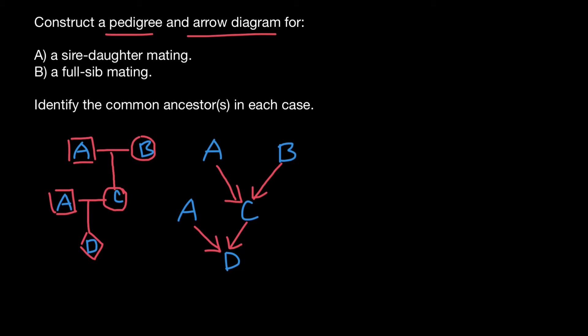Now we have to identify the common ancestors in each case. The common ancestor of D is going to be individual A. You may ask why, for example, individual B would not be a common ancestor of D. Because a common ancestor has to appear from both the father's side and the mother's side. We can trace gene flow from individual A through both the mother's side and the father's side. But genetic flow from individual B, we can only trace from one side — the mother's side. So this is the genetic flow of genetic information from both sides, mother's side and father's side. We're done with question A.